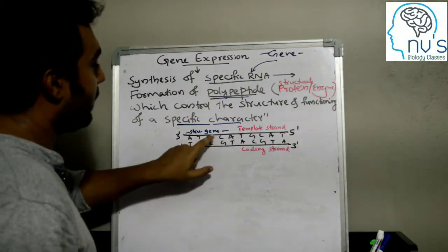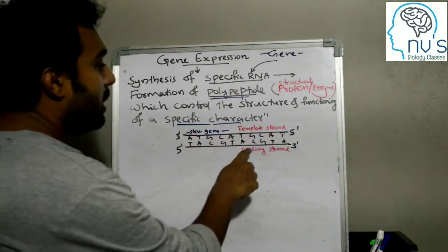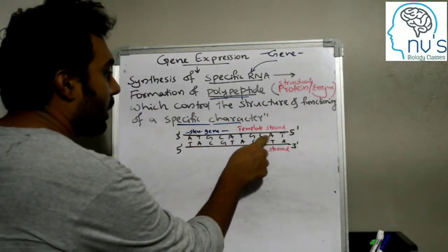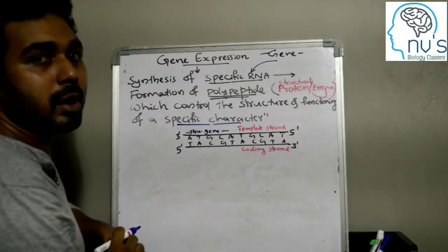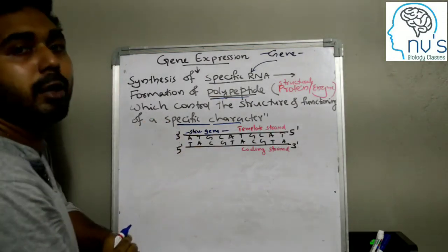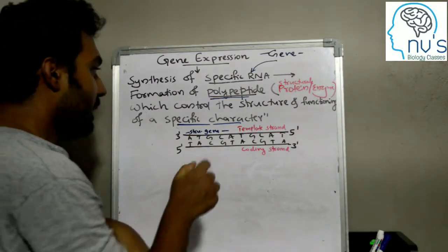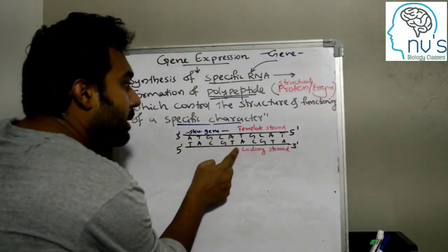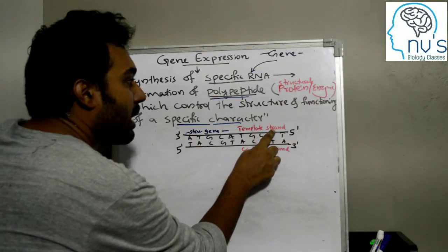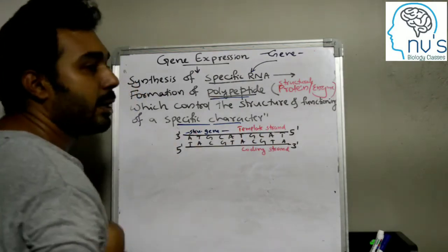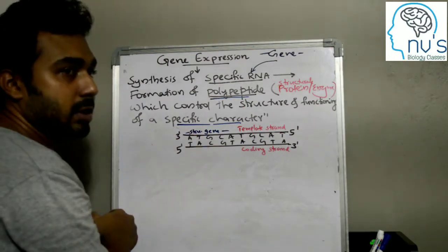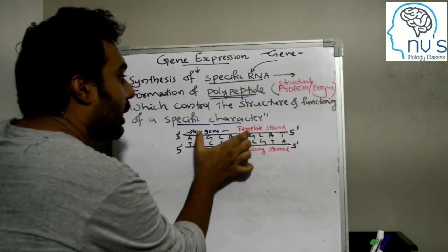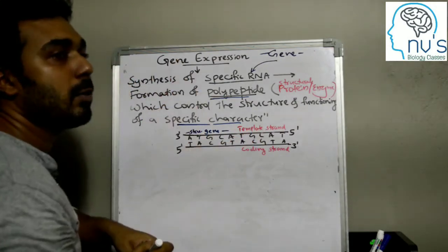DNA is a double strand — it has a template strand and a coding strand. You need to know that from the 2-stranded DNA, only 1 strand is used to produce RNA. That is why the template strand is used, and from the template strand, RNA is created as a single strand.